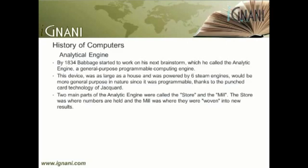In a modern computer, these same parts are called the memory unit and the central processing unit, known as the CPU. Like the CPU in a modern computer, the mill would rely upon its own internal procedures, to be stored in the form of pegs inserted into rotating drums called barrels, to carry out some of the more complex instructions the user's program might specify. The programming language to be employed by users was similar to modern day assembly languages. Loops and conditional branching were possible, and so the language as conceived would have been Turing complete, long before Alan Turing's concept. Three different types of punch cards were used: one for arithmetic operations, one for numerical constants, and one for load and store operations, transferring numbers from the store to the arithmetical unit or back.